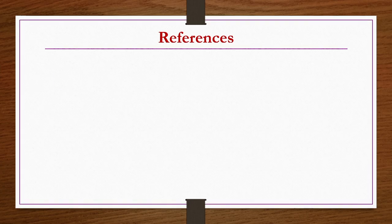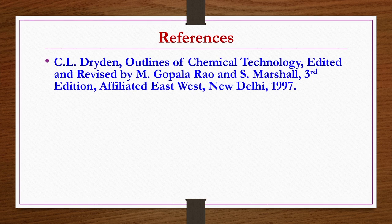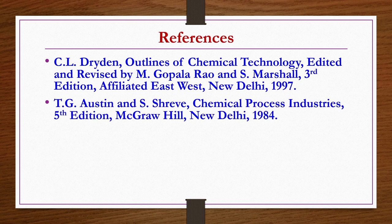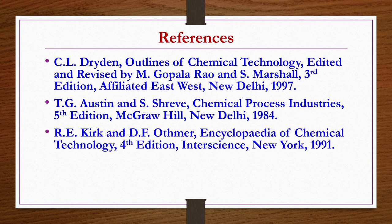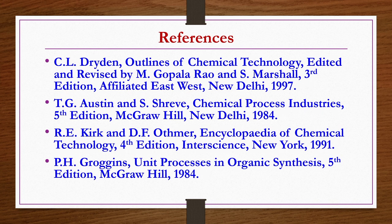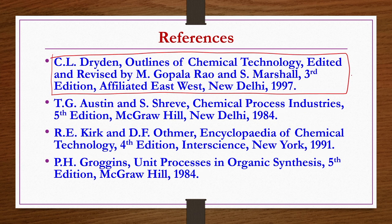References for today's and the previous lecture on polymer industry: Outlines of Chemical Technology by Dryden, edited and revised by Gopalrao and Marshall, third edition; Chemical Process Industries by Austin and Shreve, fifth edition; Encyclopedia of Chemical Technology by Kirk and Othmer, fourth edition; and Unit Processes in Organic Synthesis by Groggins, fifth edition. The entire lecture notes for today's and the previous lecture on polymer industry can be found from these reference books. With this we complete our lectures on polymer industries. Thank you.